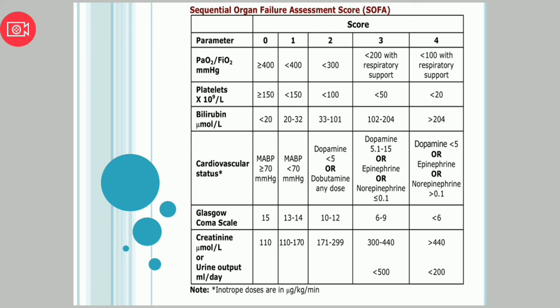For liver function — bilirubin: less than 20 micromol/L, score is 0. Between 20 and 32 micromol/L, score is 1. If the value falls between two scoring points, such as 32.5 micromol/L, we assign the higher score. So bilirubin of 32.5 micromol/L would score 2 because it is more than 32. We always score the higher point.